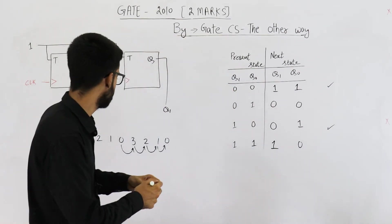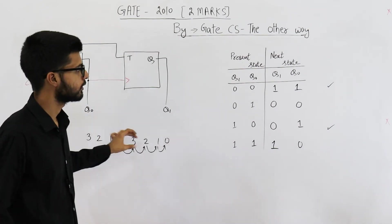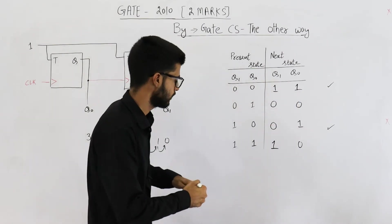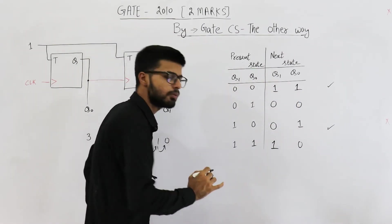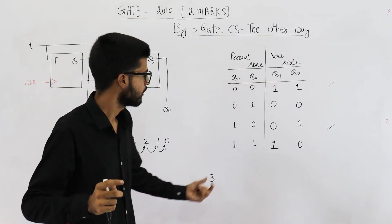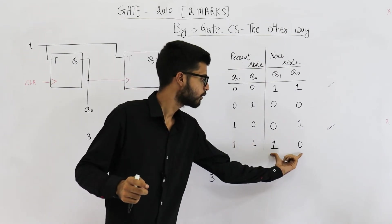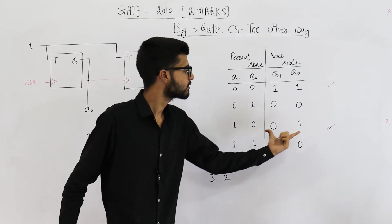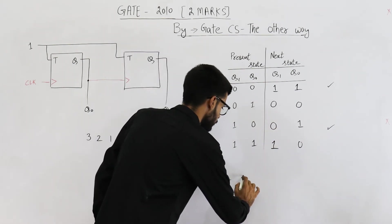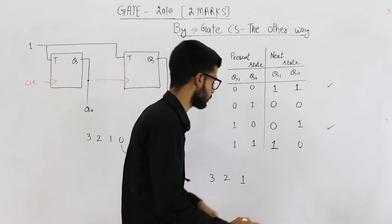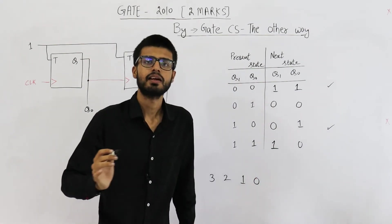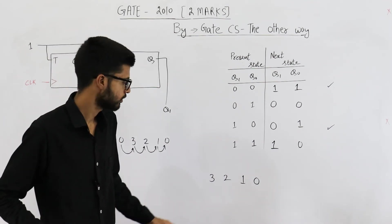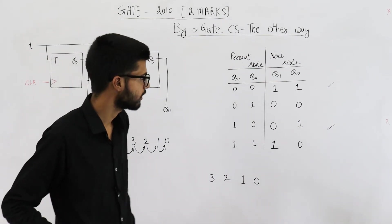Now just have a look. The initial state is 0 0. Upon seeing a positive edge of clock, we will go to 3. So the first number in the sequence is 3. If currently on 3, next state will be 2. If currently on 2, next state will be 1. If currently on 1, next state will be 0. They were asking for the next four values of the counter: 3, 2, 1, 0. Option A is correct.